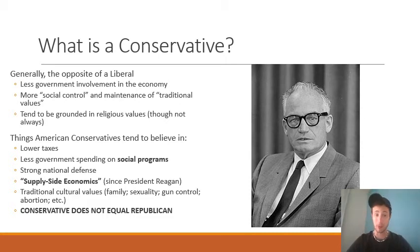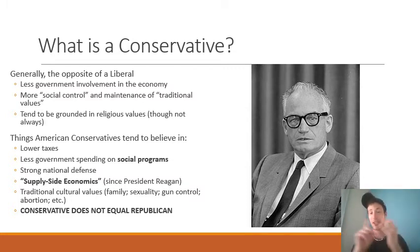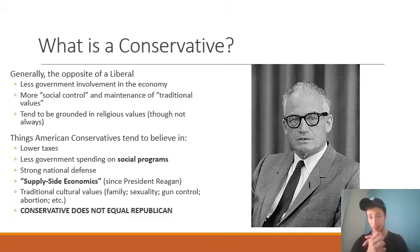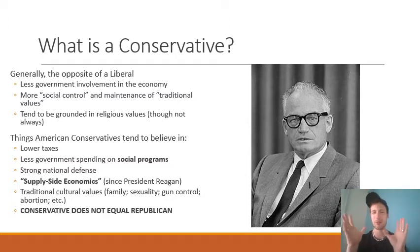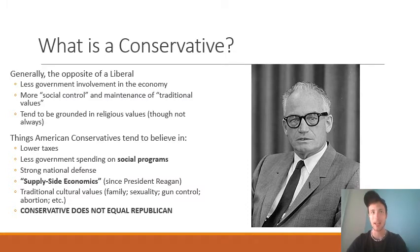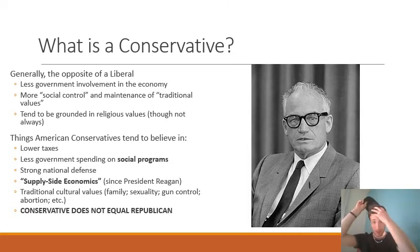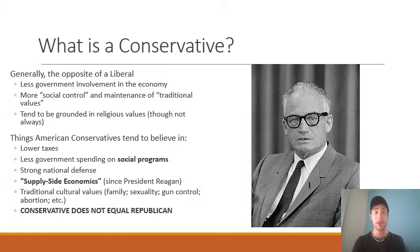Ronald Reagan gave a speech for Barry Goldwater's campaign titled 'A Time for Choosing,' which is one of his most famous speeches laying out what is even today the Republican or conservative agenda for economics and society. You can find it on YouTube. Generally, conservatives tend to believe in: lower taxes, less government spending on social programs like public health insurance, financial aid, welfare payments, and food stamps. They favor strong national defense — you can see even today the Trump budgets had some of the highest defense spending in many years. They also support supply-side economics and traditional cultural values in terms of family, sexuality, gun control, and abortion. And importantly, conservative does not necessarily equal Republican — it's a continuum.